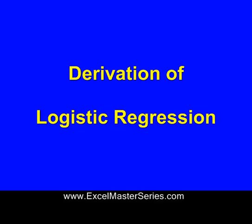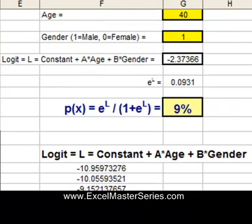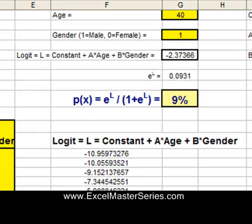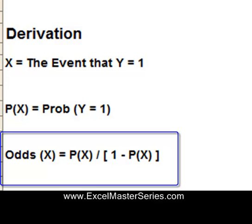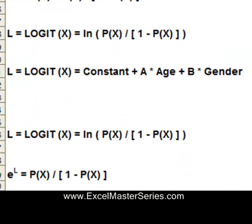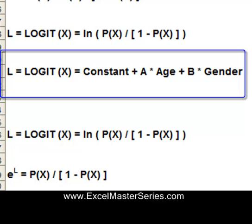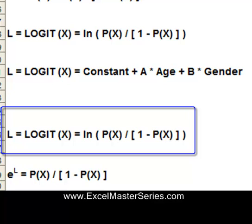Let's derive this now. We're calculating the probability of X, where X is the event that Y equals 1. The odds of X occurring are the probability of X over the probability of no X, which is 1 minus P of X. The logit L equals constant plus A times age plus B times gender. Also, the logit equals the natural log of the odds of X — that is, the natural log of P(X) over the quantity 1 minus P(X).